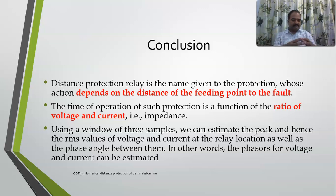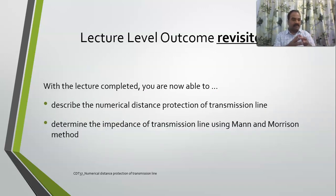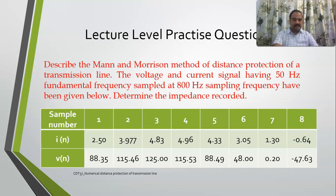In conclusion, distance protection is the name given to protection whose action depends upon the distance of the feeding point, and it takes voltage and current values and works on their ratio — the impedance. The Mann and Morrison technique requires a minimum of three samples and works well only if the signal is filtered. With this, I hope you are now able to describe how numerical distance protection is implemented and how to determine impedance using the Mann and Morrison technique.